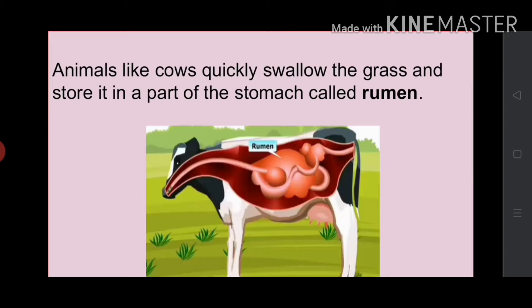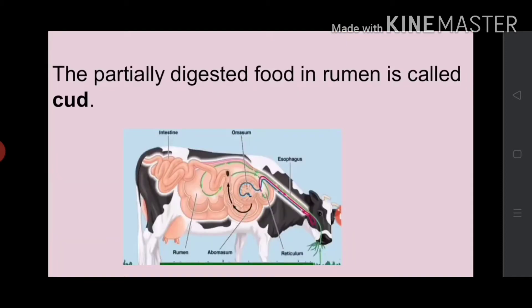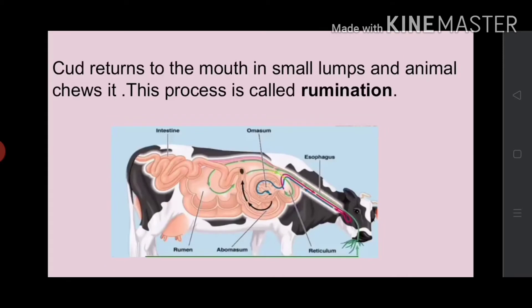Actually, they quickly swallow the grass and store it in a part of the stomach called rumen. Here the food gets partially digested, and this partially digested food present in rumen is called cud. The cud is then returned to the mouth in small lumps and animals chew it.